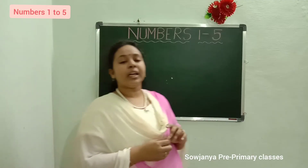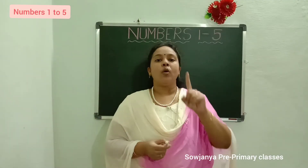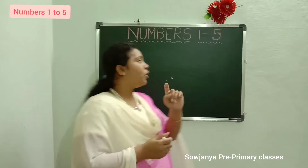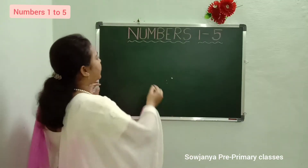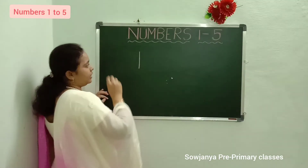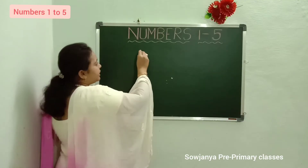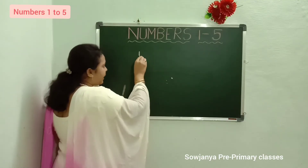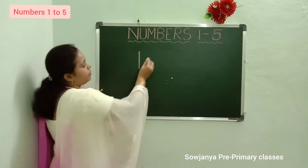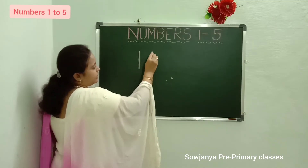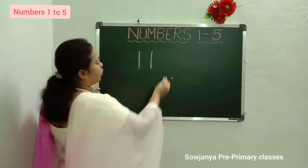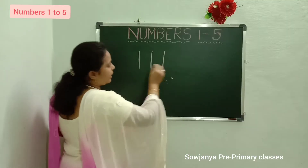First, what is the number? 1. What is the first number? 1. How to write 1? Standing line. How to write 1? Standing line. Standing line. 1. How to write 1? Standing line.